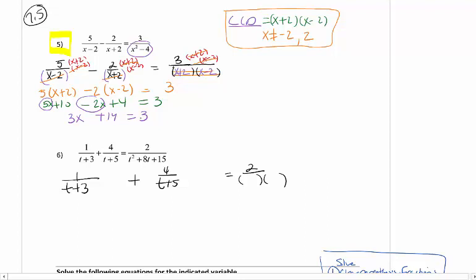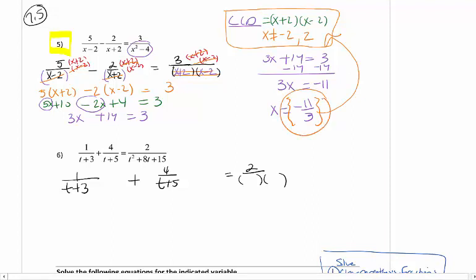So I have 3x plus 14 equals 3. I'm going to subtract 14 from both sides, gives me 3x equals negative 11. And my last step here would be to divide both sides by 3. As a minimum, make sure it's not a restriction. The best check is to plug it back in. My answer for number 5 should be negative 11 over 3.